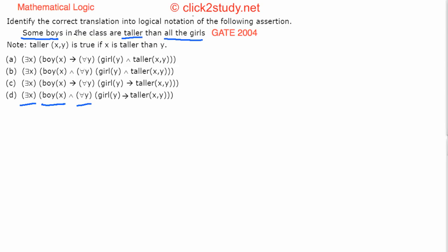When it says 'some boys,' it means there should be at least one boy. You can see it is consistent with having 'there exists X,' which is in all the options, and then 'boy(X),' which is fine as well and also in all the options. So it tells you there exists an X which is a boy.